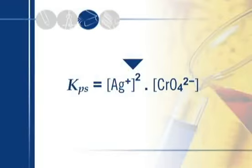Vamos escrever direto o KPS do cromato de prata. Sua fórmula é Ag₂CrO₄. Tem 2 de prata? Logo, concentração de Ag⁺ elevada ao quadrado. Cromato tem um só? Então o expoente é 1 — ou seja, não aparece expoente. Se você entendeu isso, já sabe o que vai acontecer agora: está na hora de trabalharmos os exercícios.